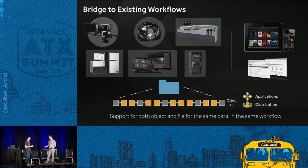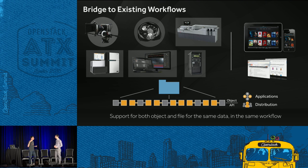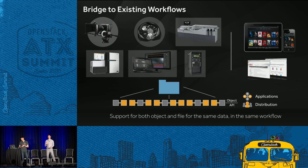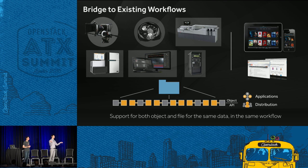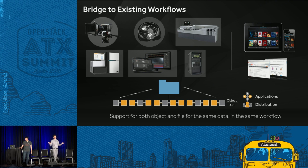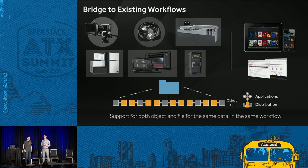At the same time, traditional file systems are hitting scale limitations, while a new generation of developers wants to build applications using an object API — S3 or Swift — because it's a REST API with better developer features. So there's a conundrum: how do we support existing tools generating data while also supporting new applications people want to build? And no, the answer isn't to just ignore file access — that would be like not bothering to get a driver's license because self-driving cars are coming.